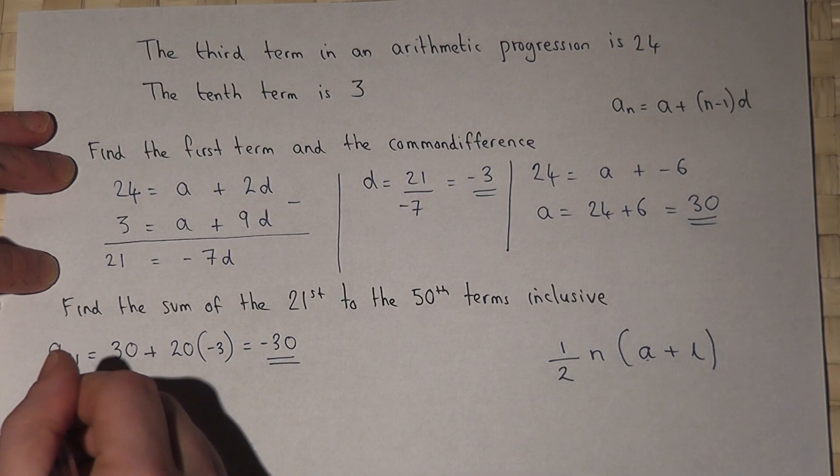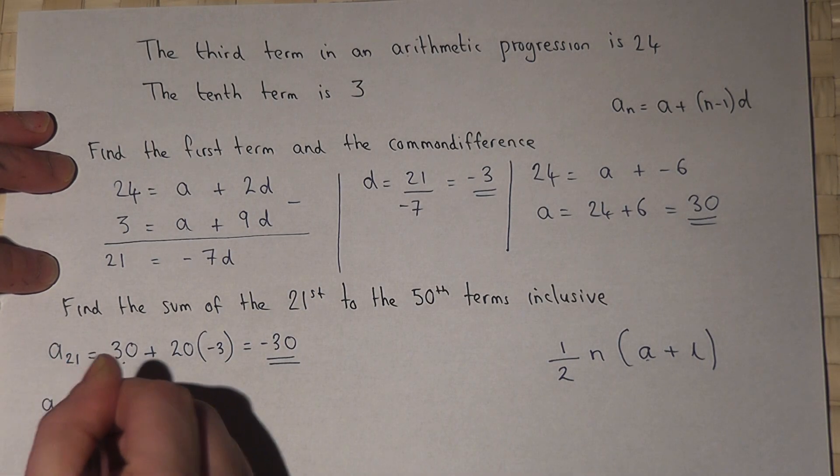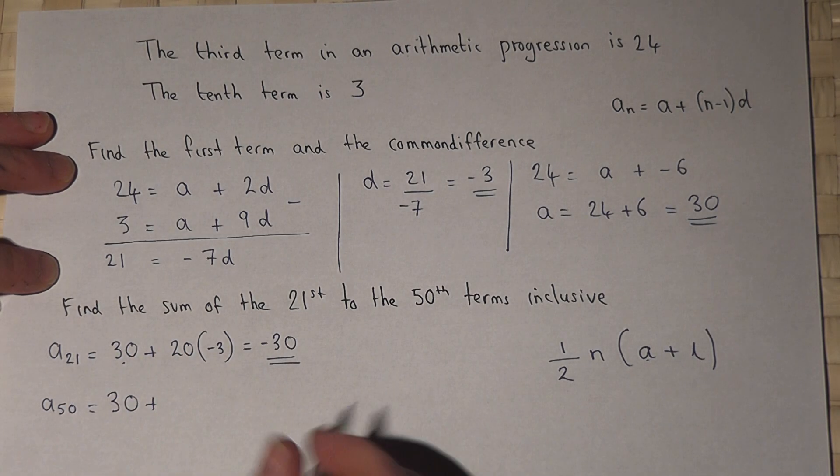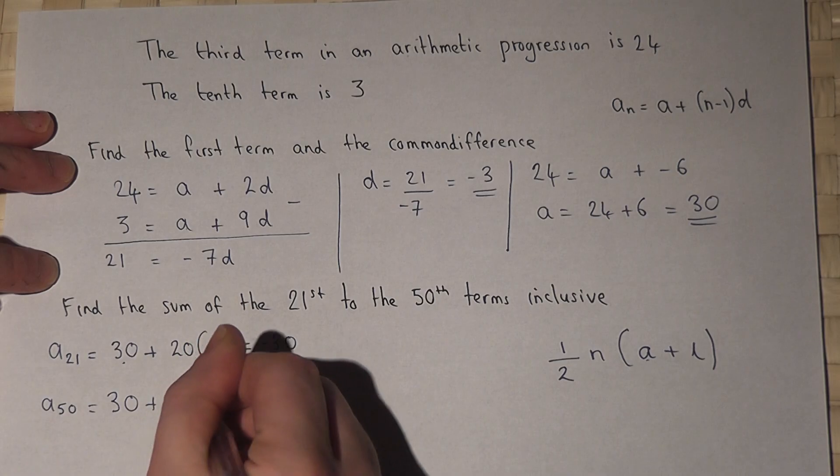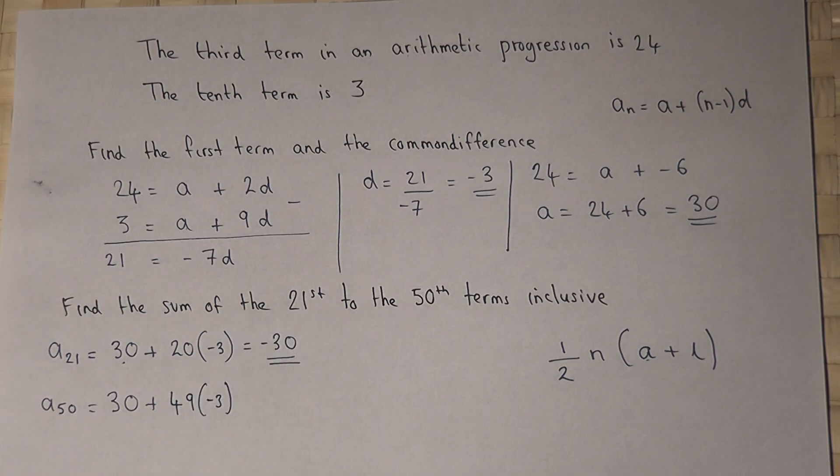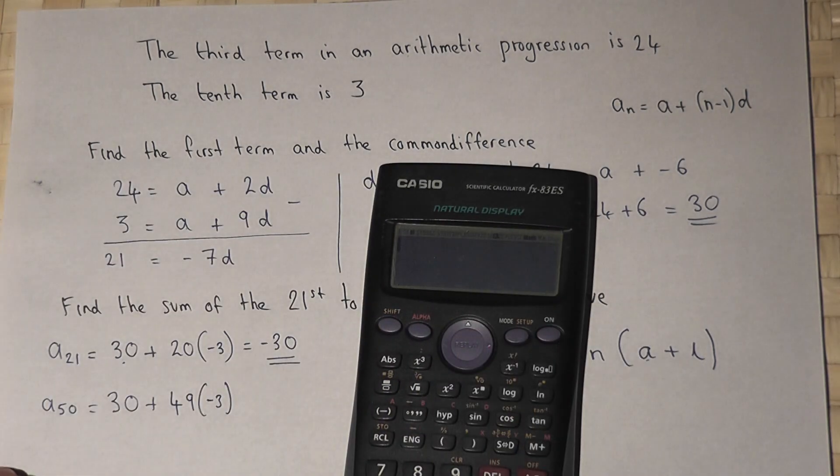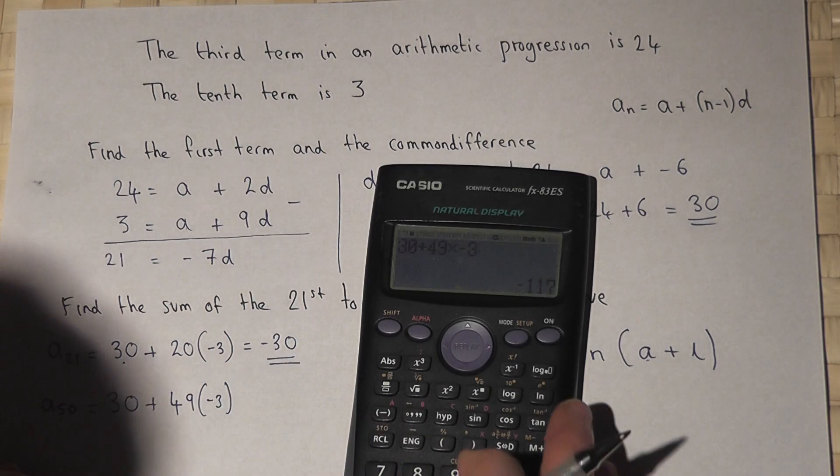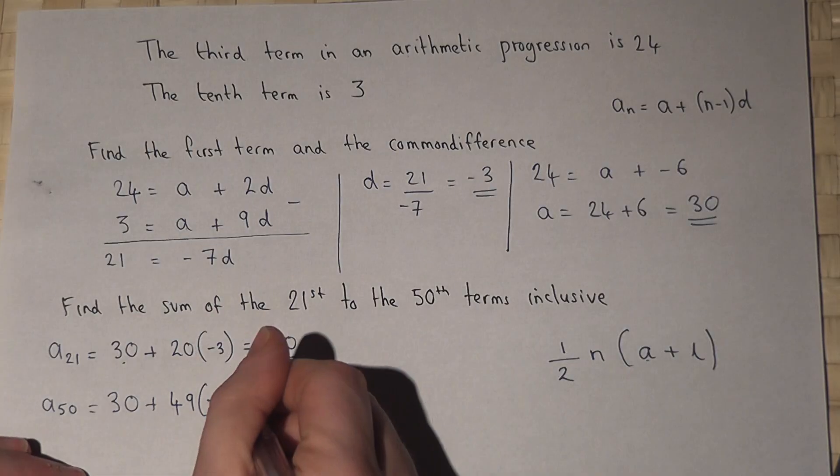And the 50th term is a plus n minus 1 is 49, times d. And to get this exactly right, 30 plus 49 times minus 3 is minus 117.